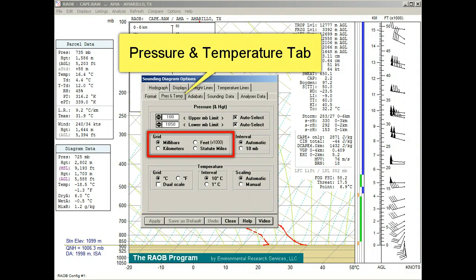The grid section allows four modes for the vertical coordinate: millibars, kilometers, feet, and miles. It also has an option for automatic grid spacing, or one for higher density gridding.